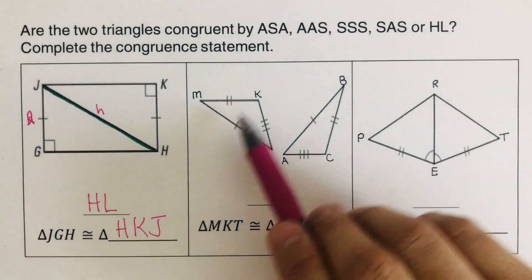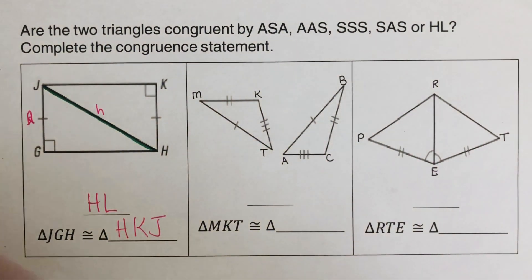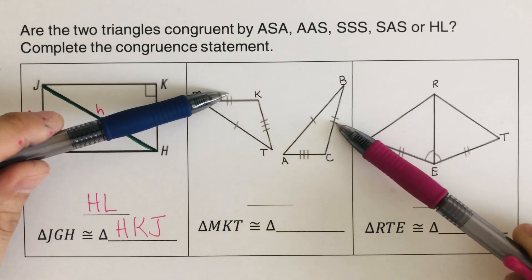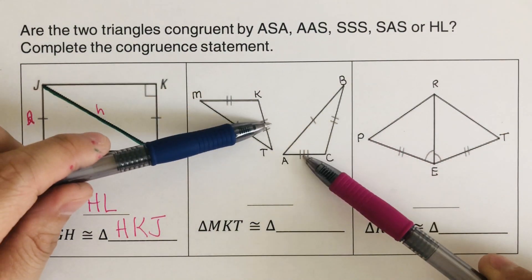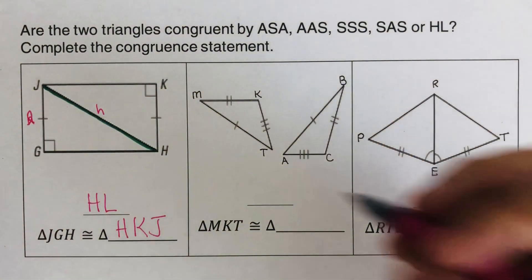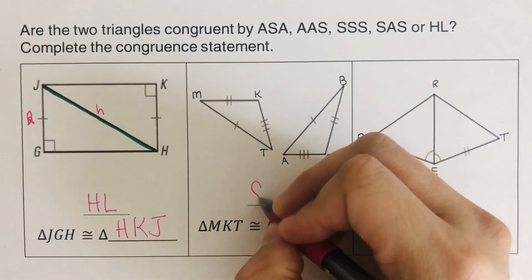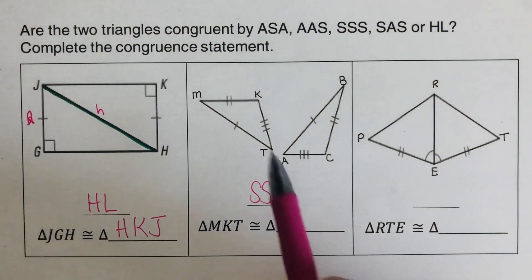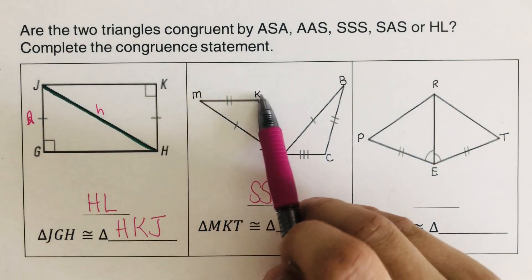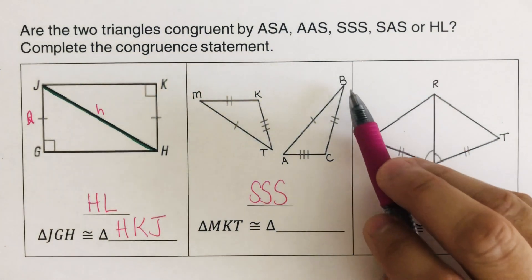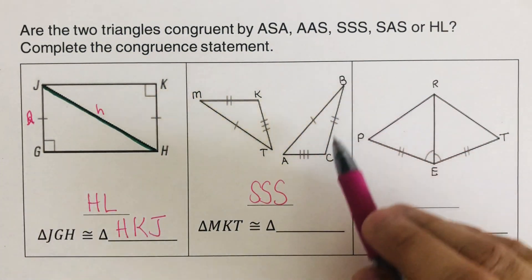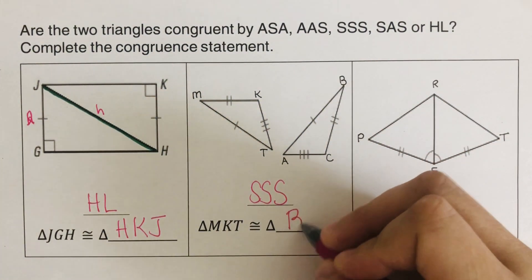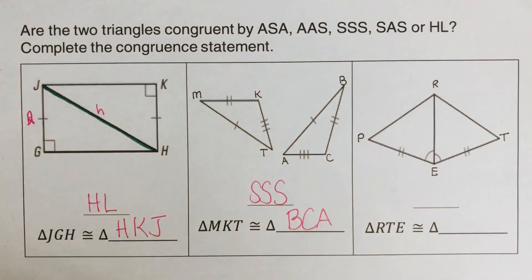This one right here — all the sides are being ticked, so this is SSS. The triangle is MKT, and the corresponding pattern gives us triangle MKT is congruent to triangle BCA.